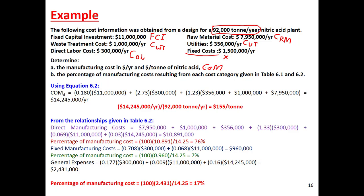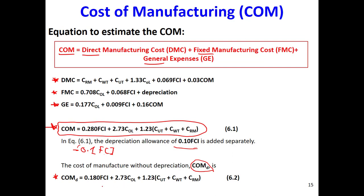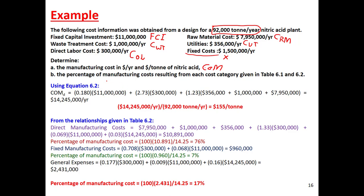We need to find the cost of manufacturing without depreciation. The equation is: COM (without depreciation) = 0.18 × FCI + 2.73 × cost of operating labor + 1.23 × utility cost + waste treatment cost. Note that waste treatment is also a significant cost — you cannot produce waste without cost.